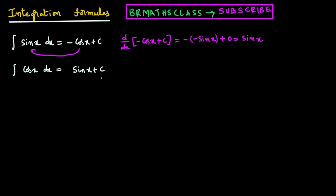We will differentiate sin x plus c. Derivative of sin x plus derivative of c — derivative of sin x is cos x, plus derivative of constant is 0. Because of this reason, integral of cos x dx is sin x plus c.